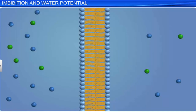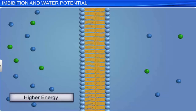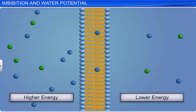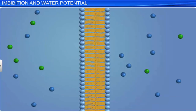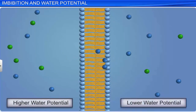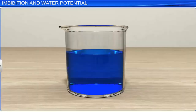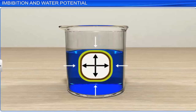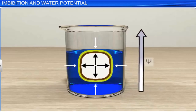When two solutions come into contact, water molecules from the system with higher energy will move to the one with lower energy — that is, movement will take place from the solution with higher water potential to the one with lower water potential. For a solution at atmospheric pressure, its water potential is equal to its solute potential. But if pressure greater than atmospheric pressure is applied to pure water or a solution, it results in an increase in water potential.